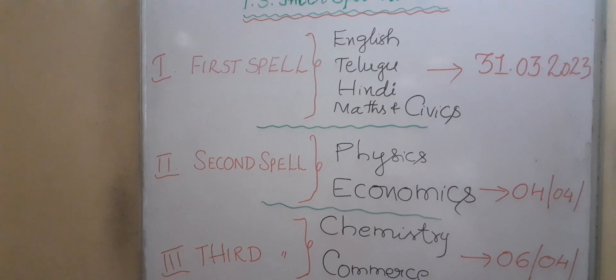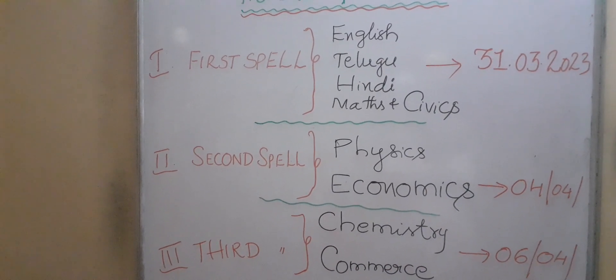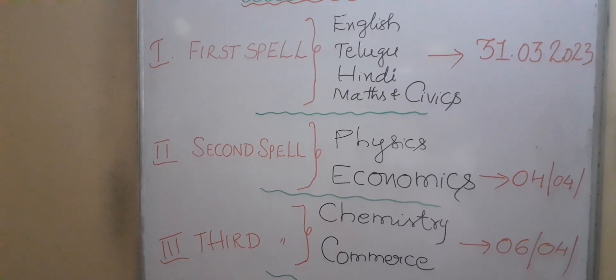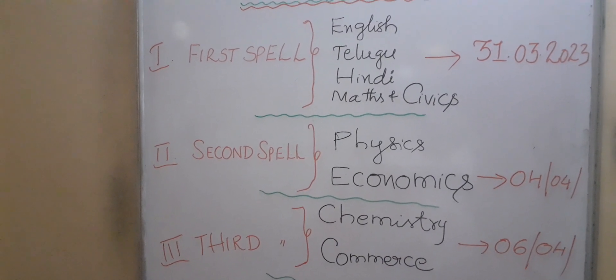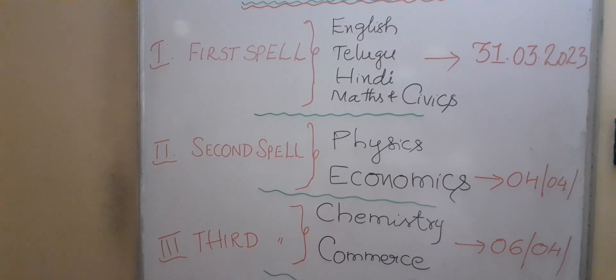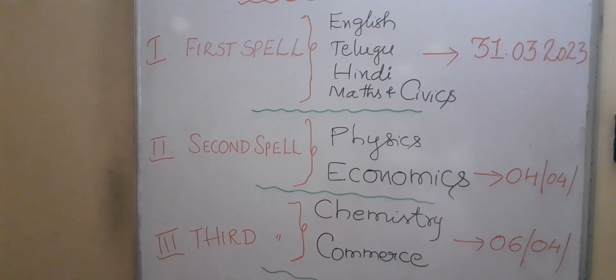First spell is for English, Telugu, Hindi, Mathematics, and Civics. For these subjects, the correction is going to start from 31st of March, for both first year and second year.